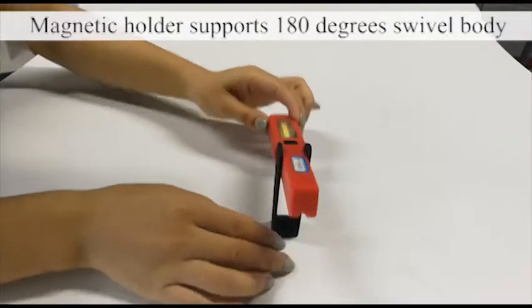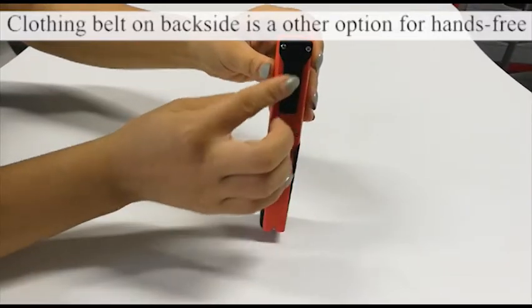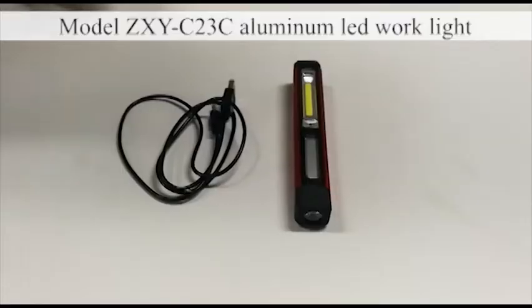Magnetic holder supports 180 degrees swivel body. Clothing belt on back side is another option for hands-free.